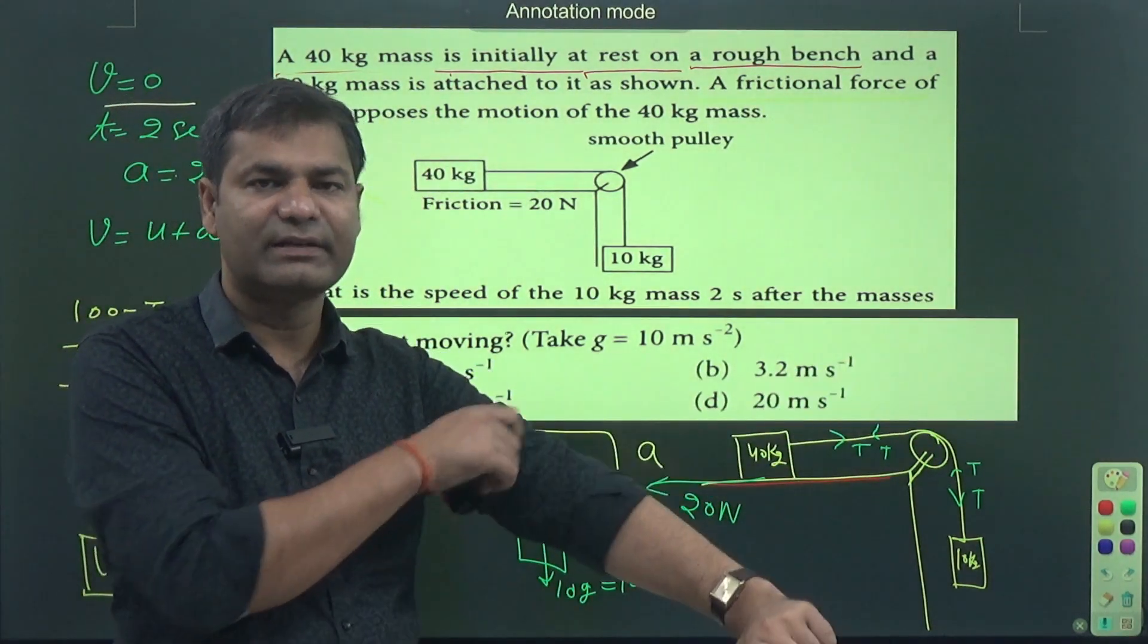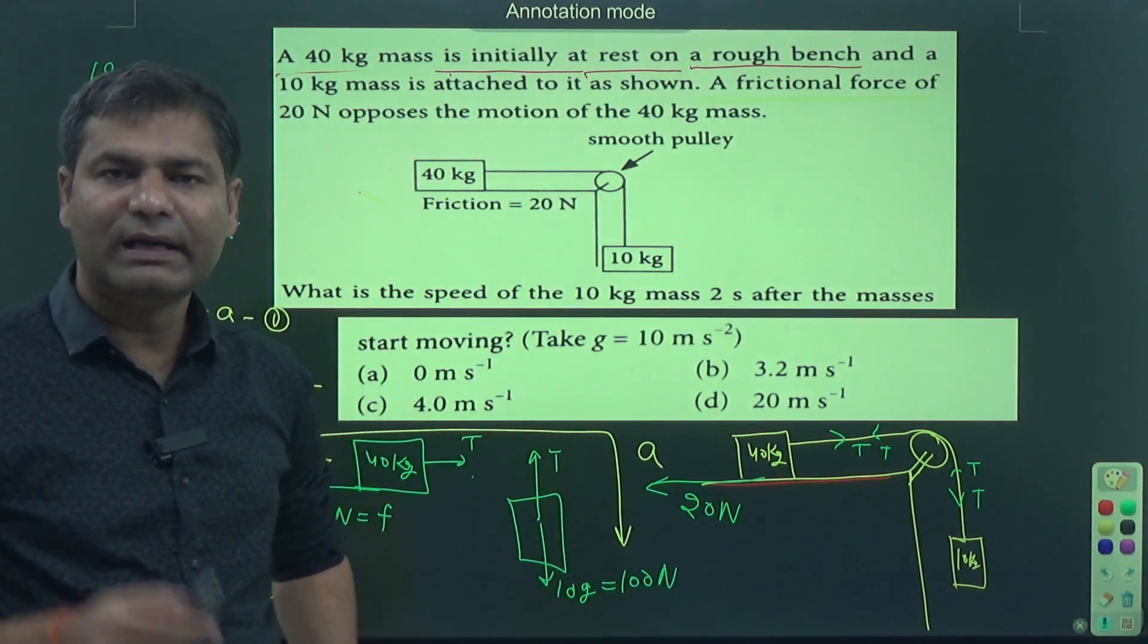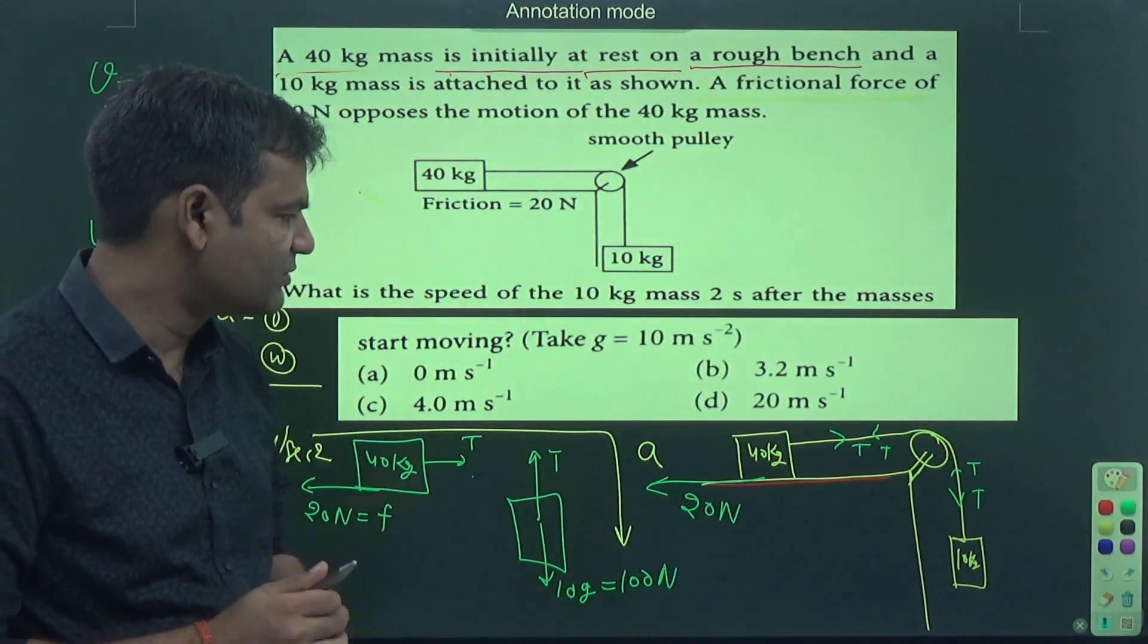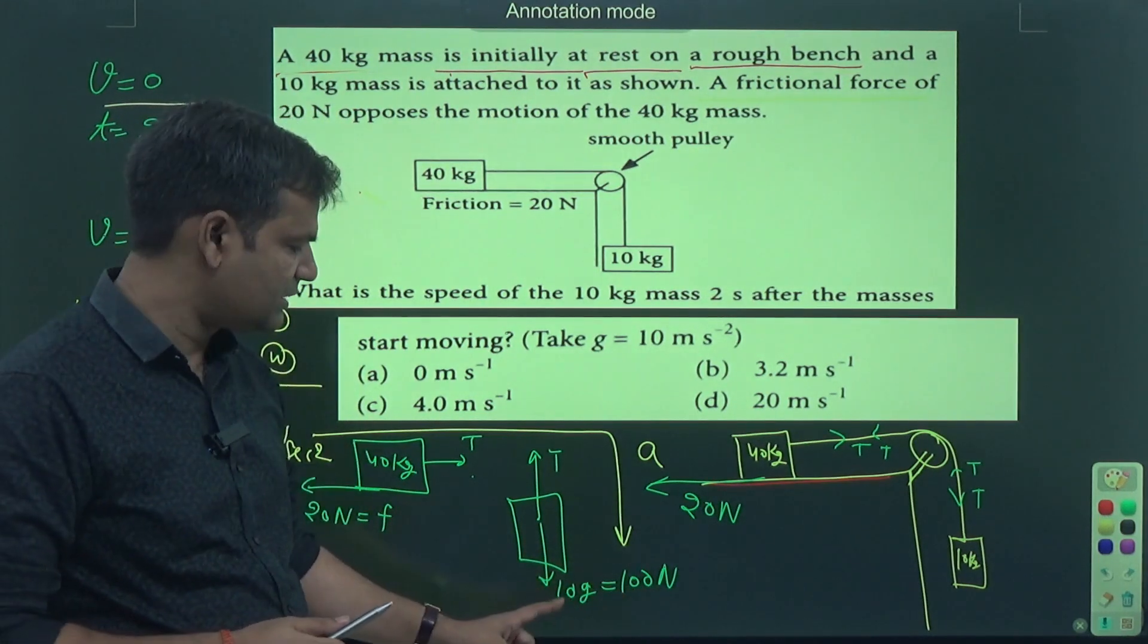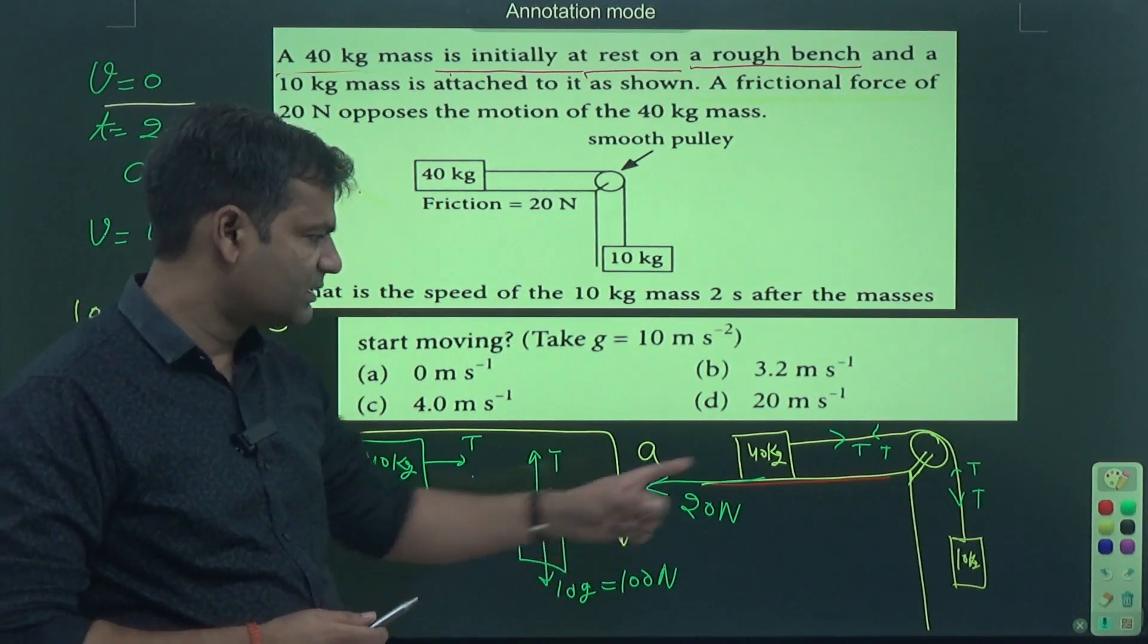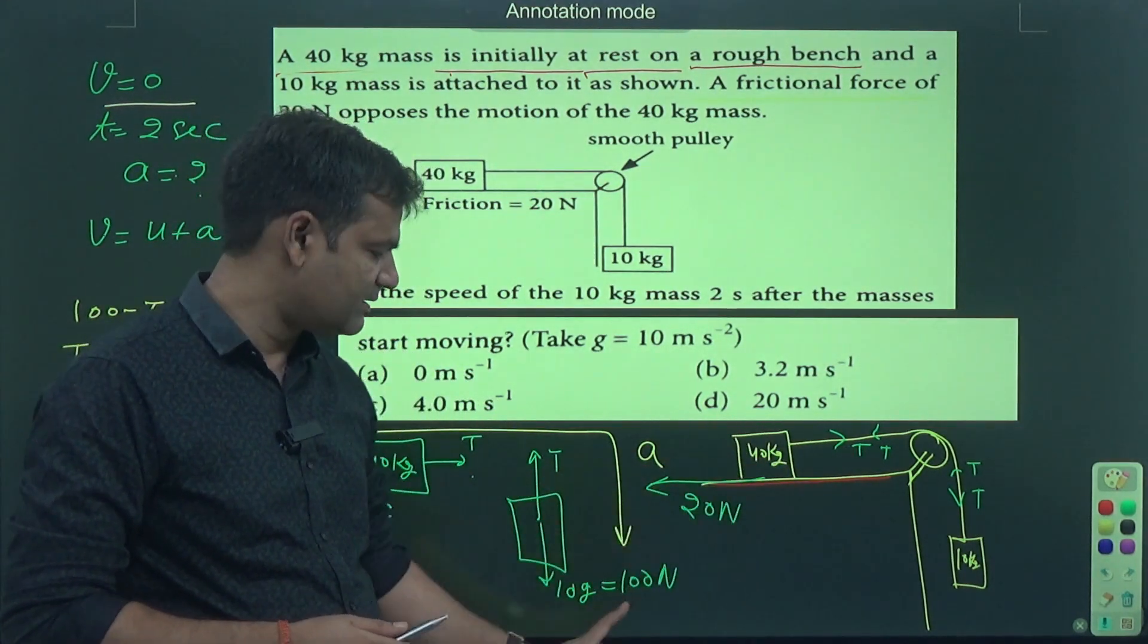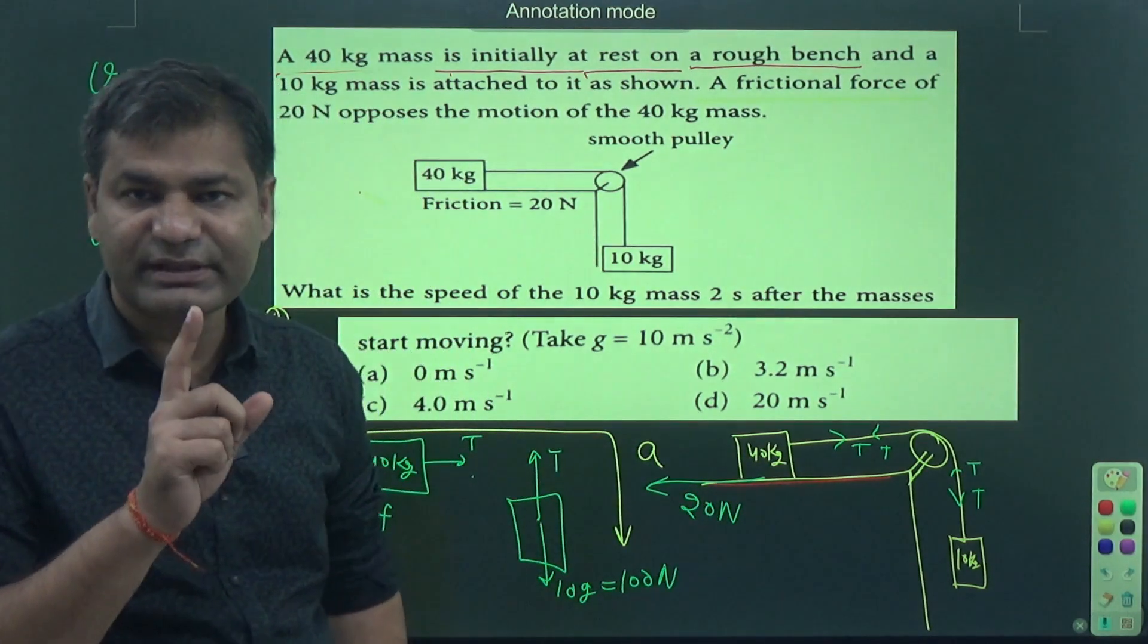Next, check if motion starts. At t = 0, suppose the whole system is at rest. Tension T equals 100 Newtons because T = 10g = 100N. If motion is not starting, then T is 100 Newtons. 100 Newtons is greater than the frictional force. If applied force is greater than frictional force, it means motion is allowed.